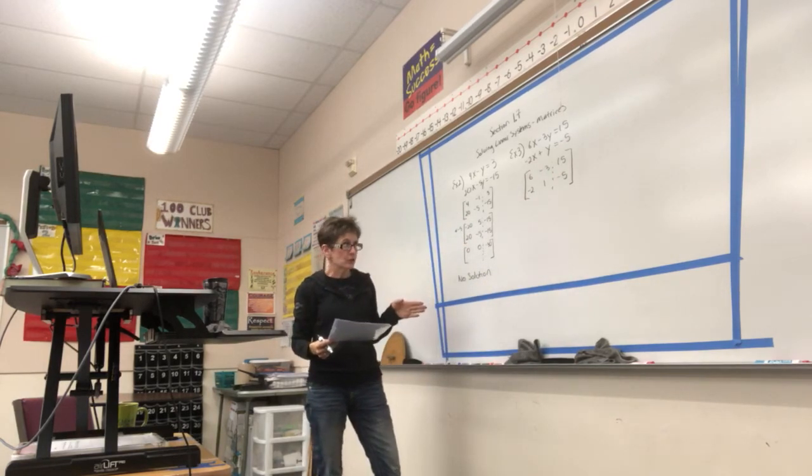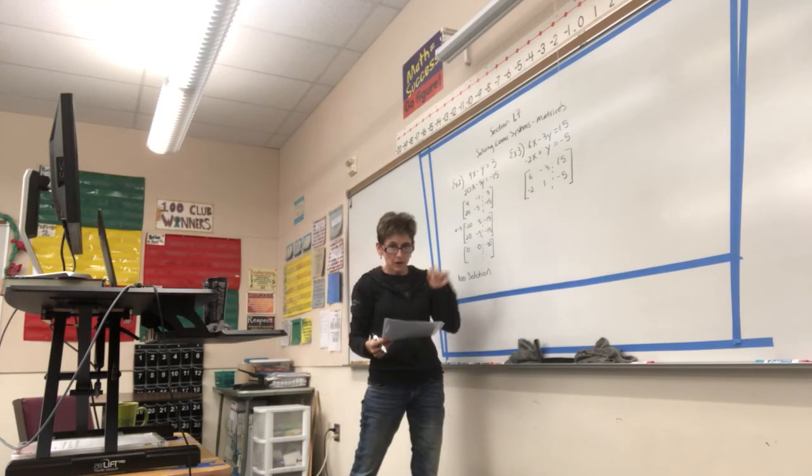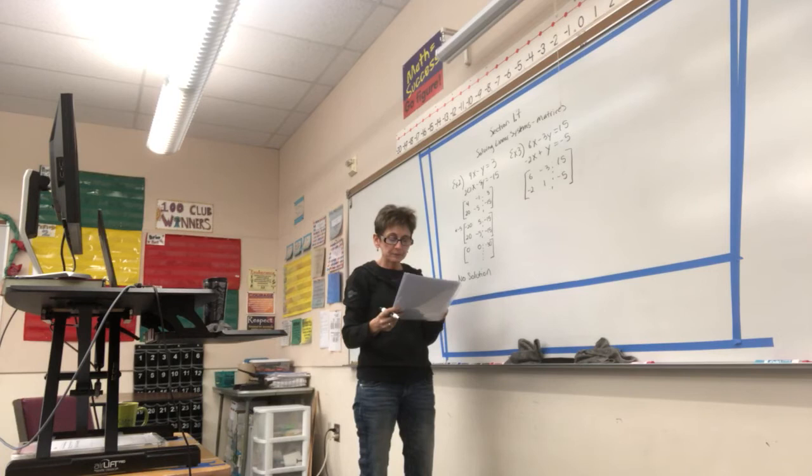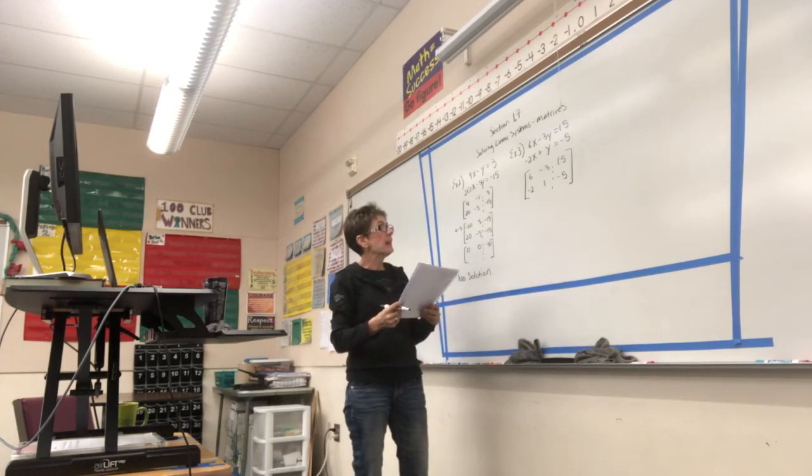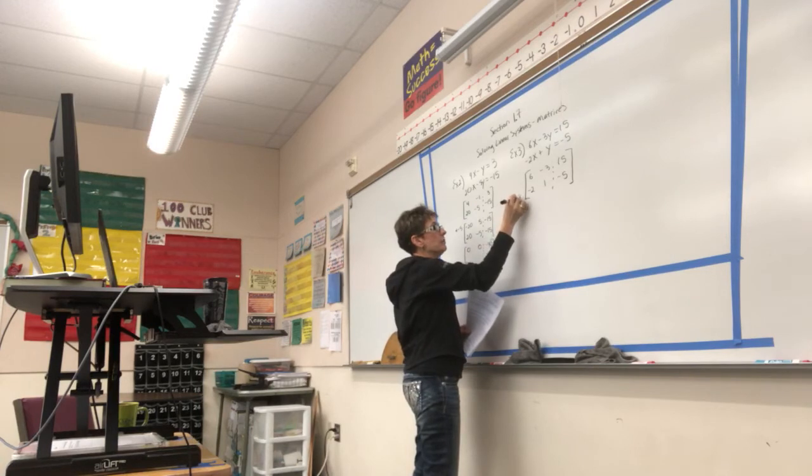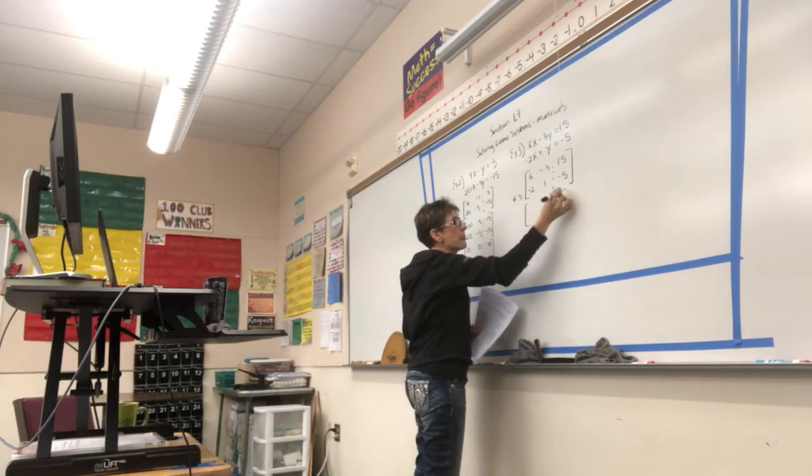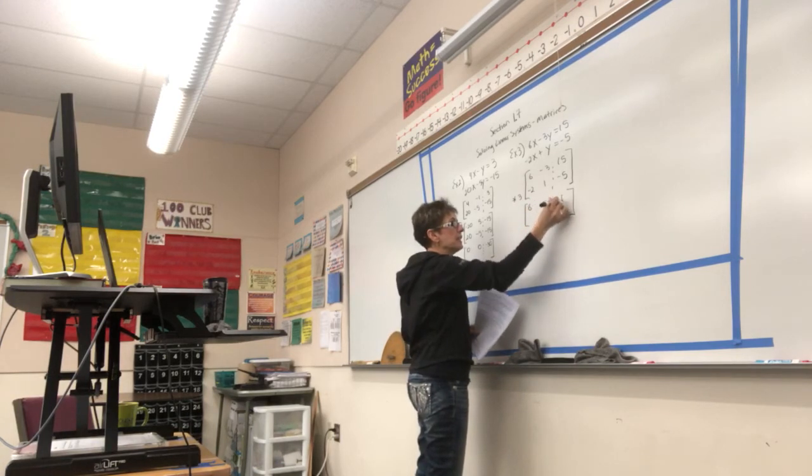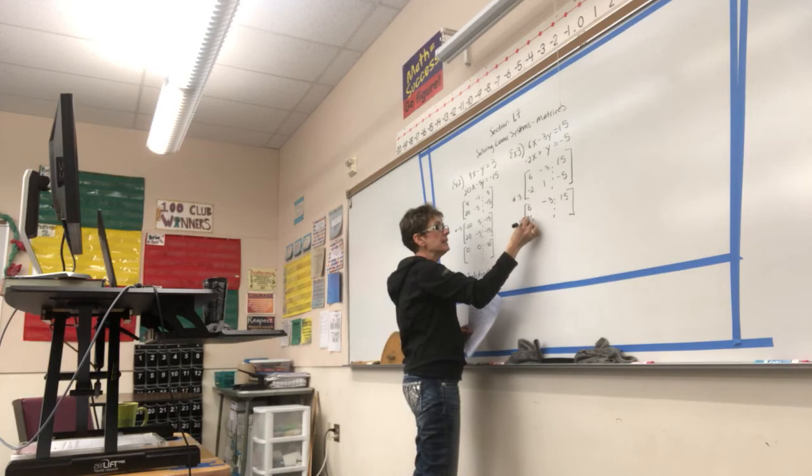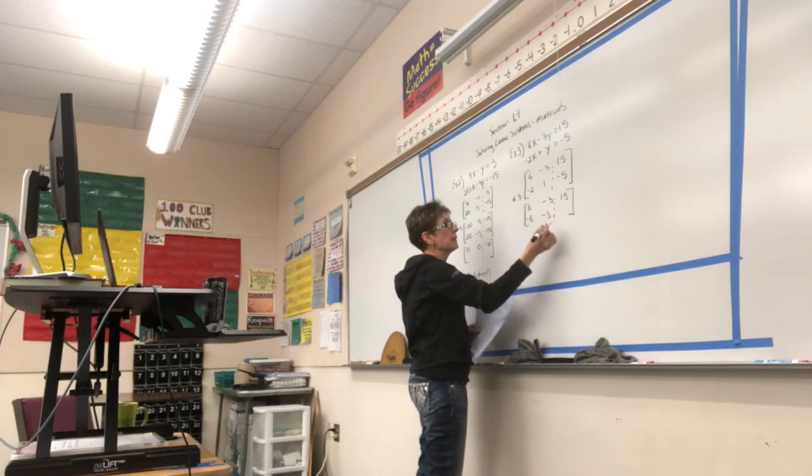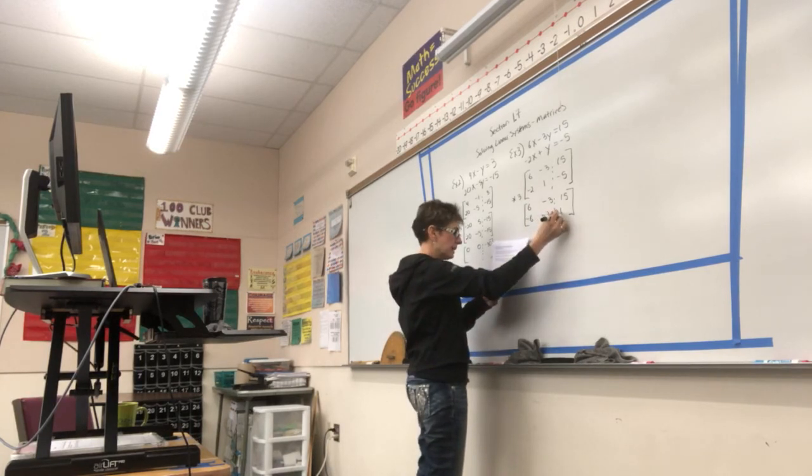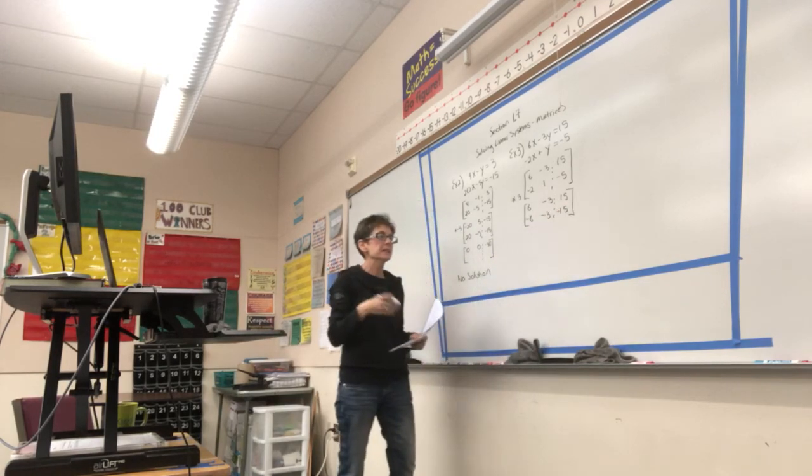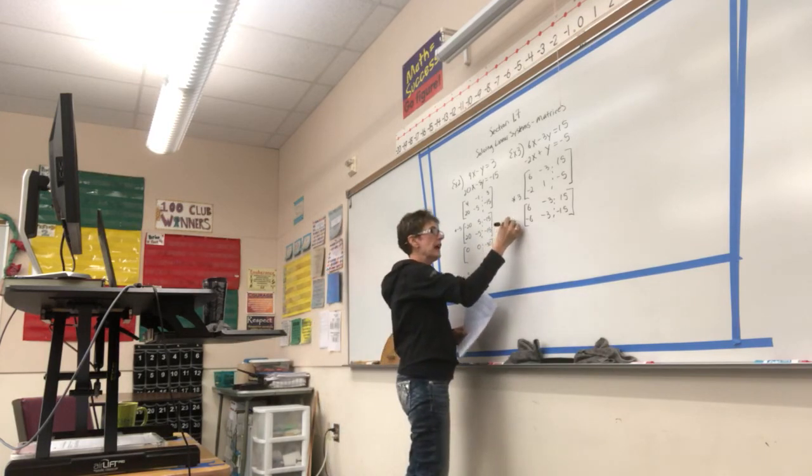My goal is to try to make it be 1, 0 on the left top row and 0, 1 on the left bottom row. So I am going to times everything in the second equation by 3. When I do, my first row is still 6, negative 3, 15. And the second row is going to be negative 6, negative 3, and negative 15. So negative 6, negative 3, negative 15.